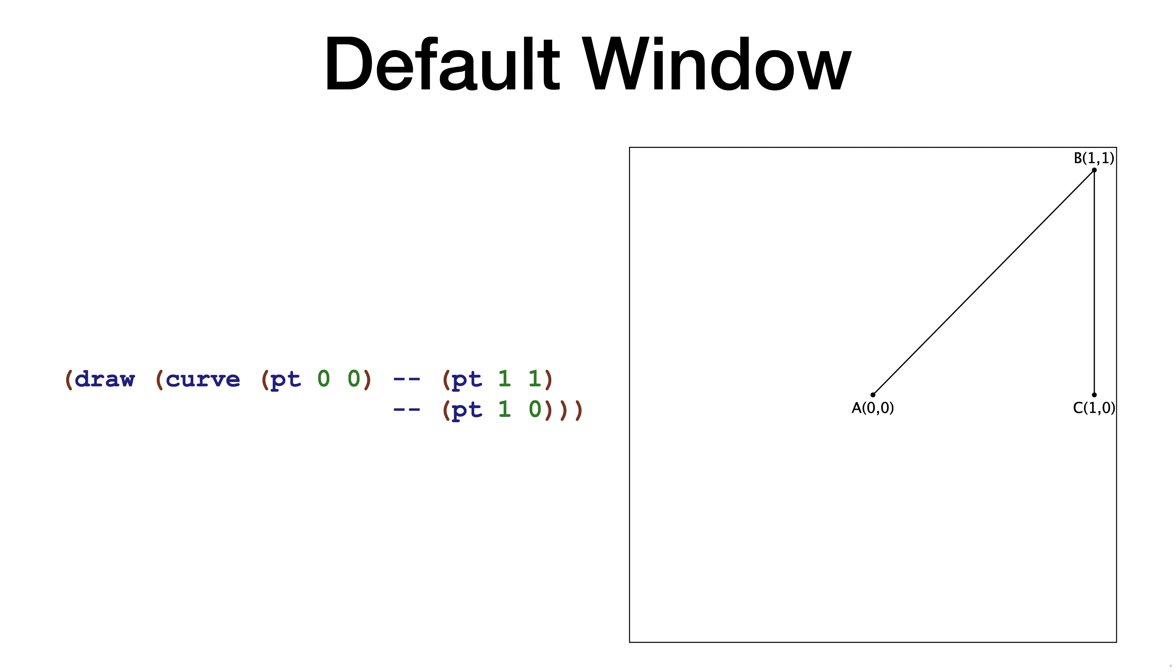The frame at the right shows the default window. The center of the default window is 0, 0. The top right is 1, 1 and the left bottom corner is minus 1, minus 1.